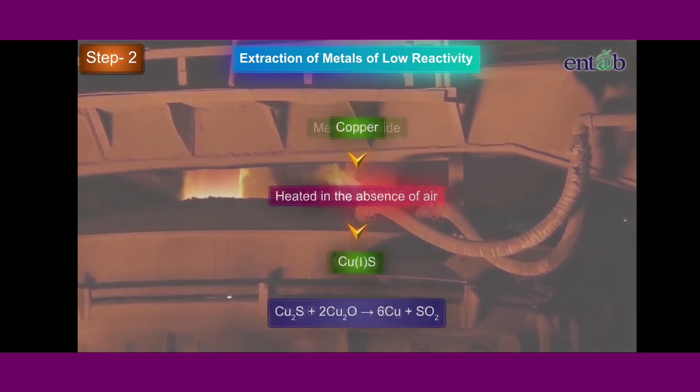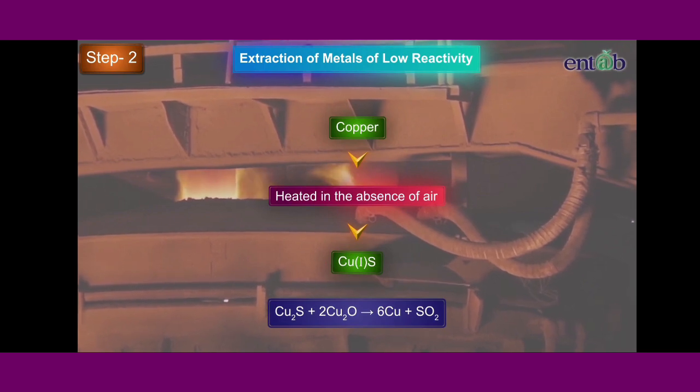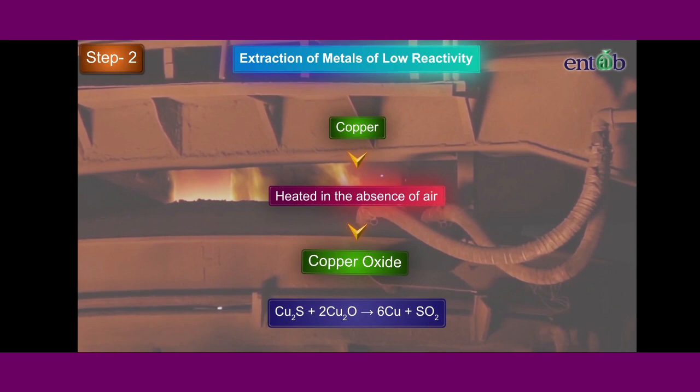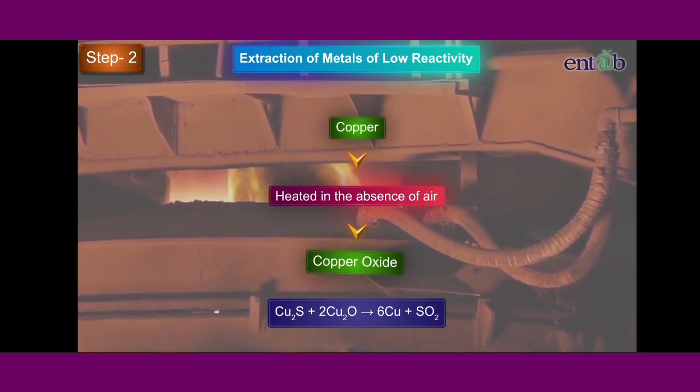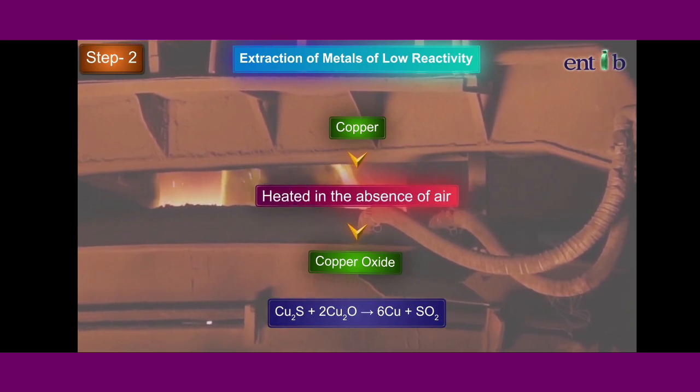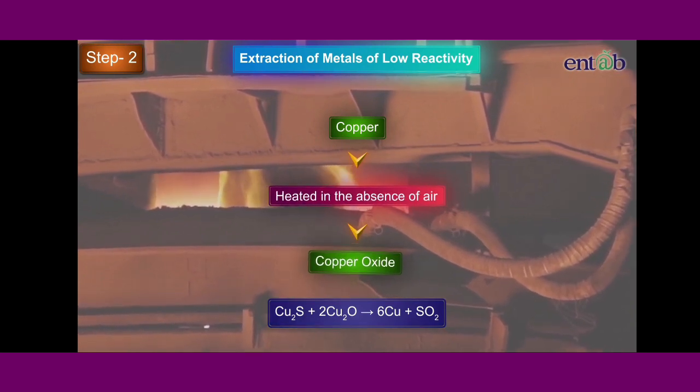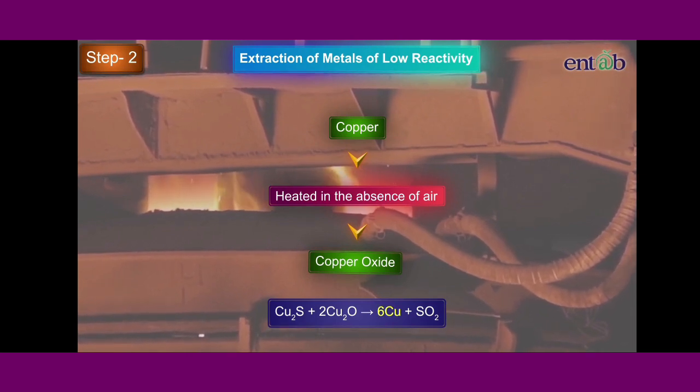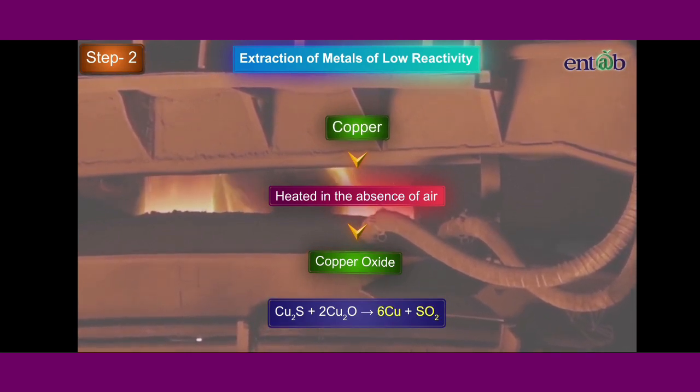While, in the case of copper, when a good amount of copper 1-sulfide ore has been converted into copper 1-oxide, then the supply of air for roasting is stopped. In the absence of air, copper 1-oxide formed above reacts with the remaining copper 1-sulfide to form copper metal and sulfur dioxide.